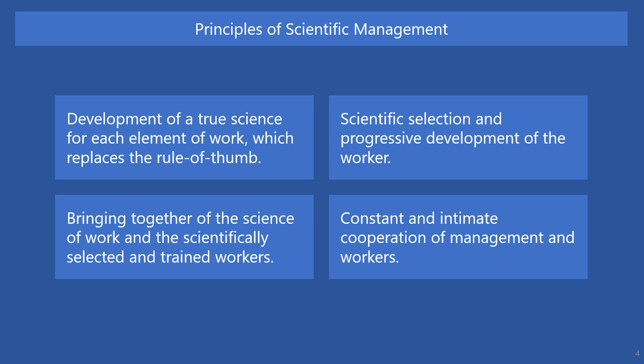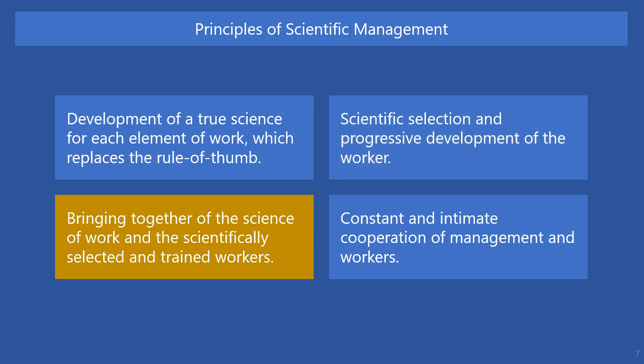Taylor's principles of scientific management were built on four core tenets: the development of true science for each element of an individual's work, which replaces the old rule-of-thumb method; the scientific selection and progressive development of the worker; the bringing together of the science of work and the scientifically selected and trained workers; and the constant and intimate cooperation of management and workers.